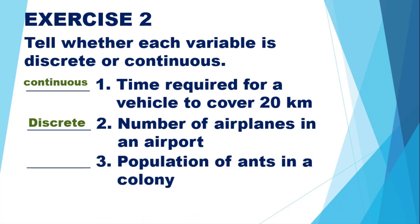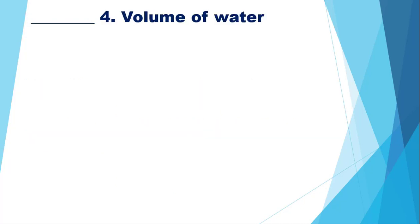For number 3, population of ants in a colony — we can count the population using whole numbers and counting numbers, so it's a discrete variable. For number 4, volume of water — say 1 liter or 500 ml, which is 0.5 liters. So we have a continuous variable.